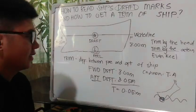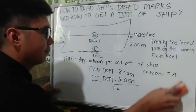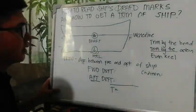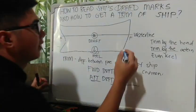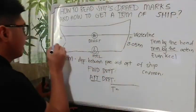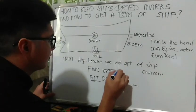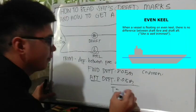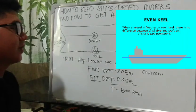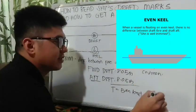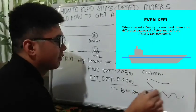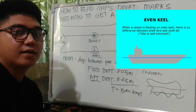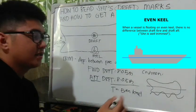Paano naman kapag equal sila? Another example. Halimbawa naman kapag yung forward and after natin is same sila ng value — halimbawa na lang 8.05 meter sa proa, at 8.05 meter sa pupa. Ang sagot po dyan is tinatawag nating even keel — equal sila ng forward and aft. Meaning, ang magiging condition ng vessel natin, since yung kinuha nating drop is same sila, ang magiging resulta or condition ng stability ng vessel is even keel — ibig sabihin pantay lang po.